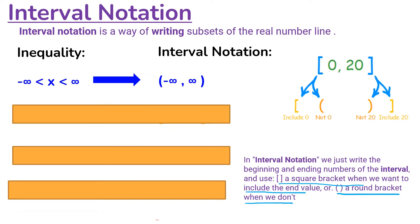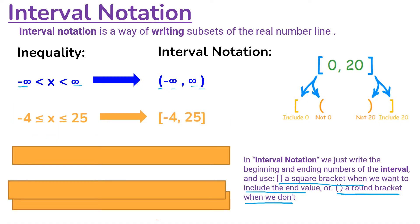For the inequality where X is greater than negative infinity but less than positive infinity, we have round brackets because we're not including the infinity values — there's no equal-to sign underneath. Remember when you solved inequality problems and graphed them: if you had that equal-to sign you shaded in the circle to include that value, but you don't shade when you don't want to include it. Same concept here.